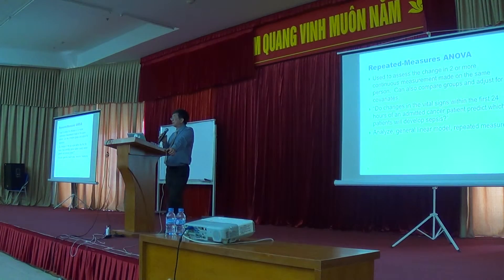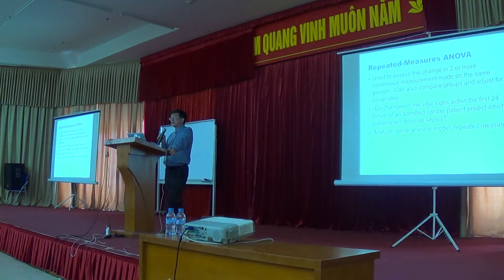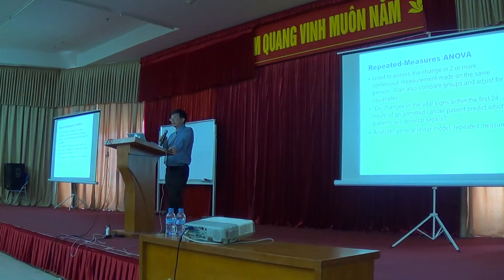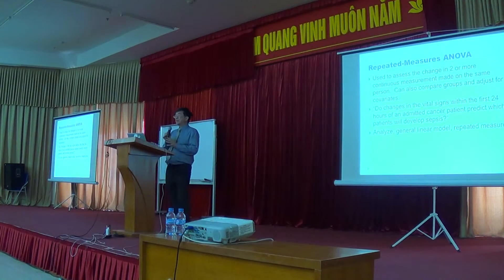Repeated measures ANOVA is used to assess the change in two or more continuous measurements made on the same subjects. You can also compare groups and adjust for covariance. For example: do changes in vital signs within the first 24 hours of an admitted cancer patient predict which patients will develop sepsis? You analyze the before-and-after values as repeated measures, and this type of analysis falls into the category of the general linear model.